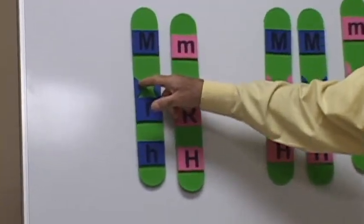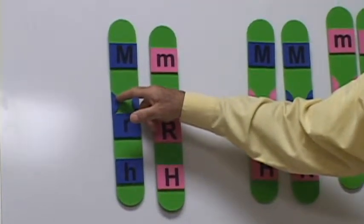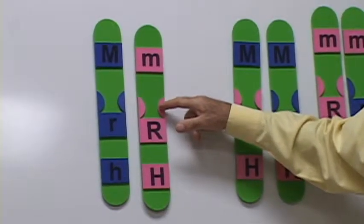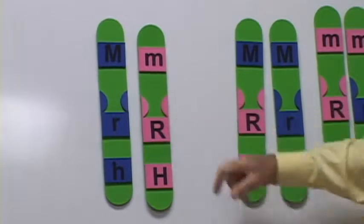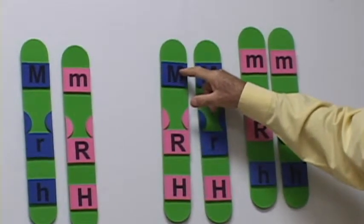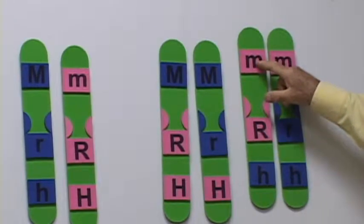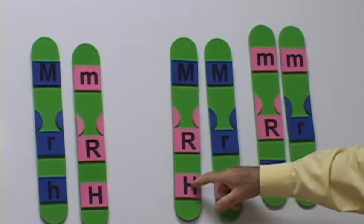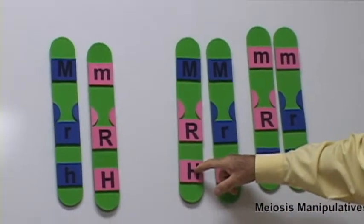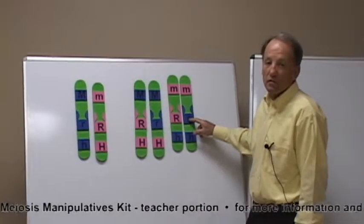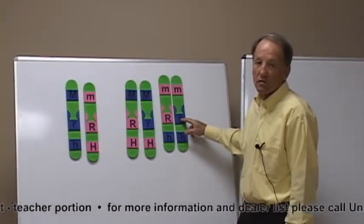Chromosomes of paternal origin have a blue centromere, while maternal have a pink centromere. Alleles in blue are of male origin and pink are of female origin. Uppercase letters are used to indicate dominant alleles and lowercase letters to indicate recessive alleles.